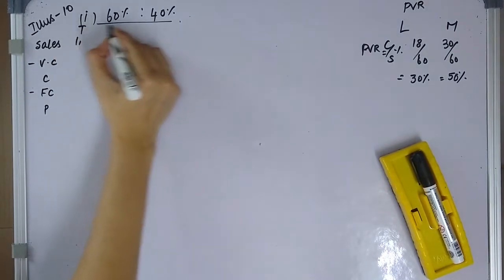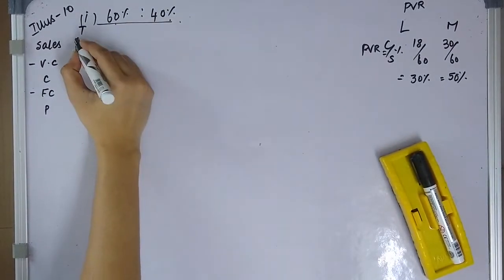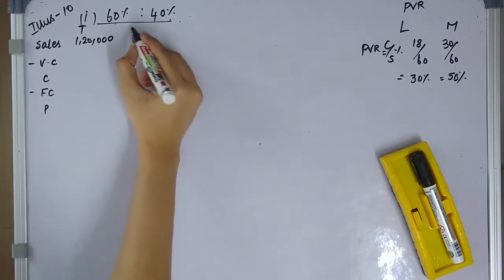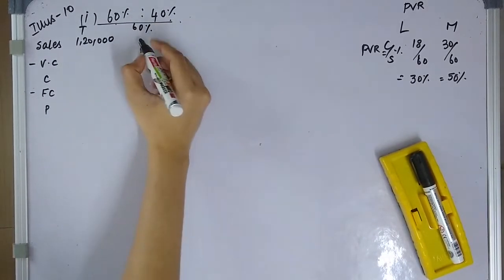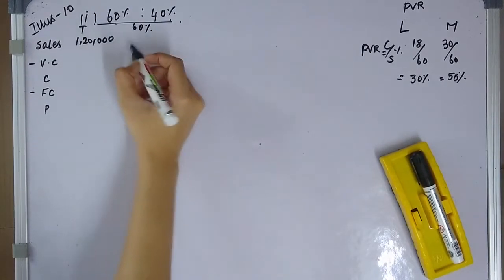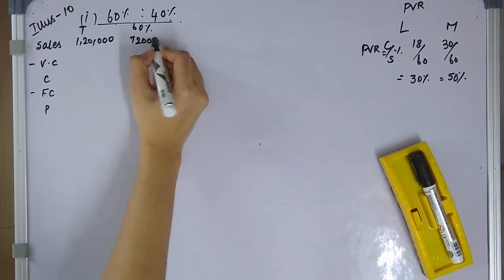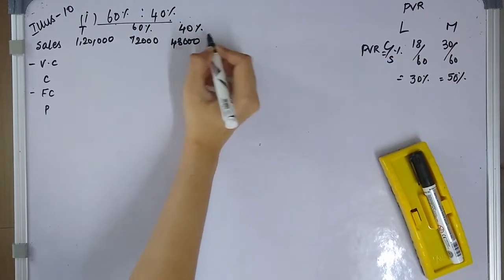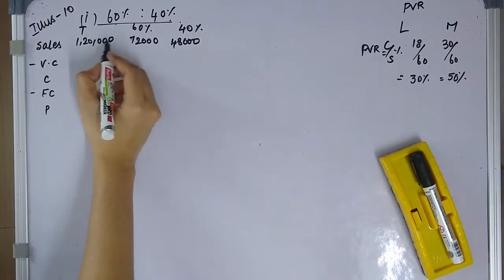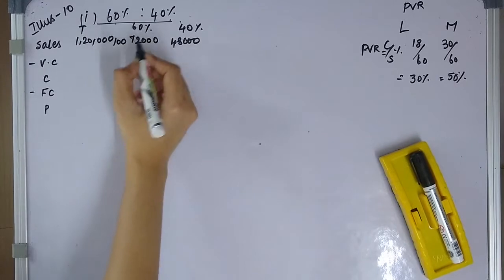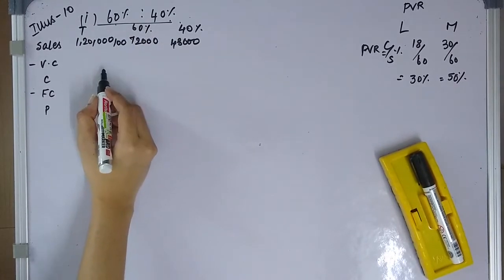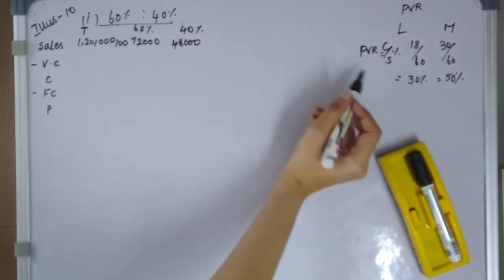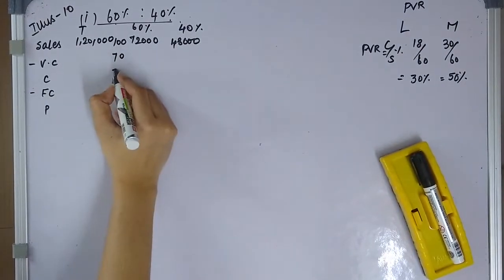For the first mix: sales total is 1,20,000 — 60% capacity to Product L gives 72,000, and 40% capacity to Product M gives 48,000. Sales total is 100%. For Product L, variable cost is 70%, so contribution is 30%. For Product M, PVR is 50%, so variable cost is 50% and contribution is 50%.